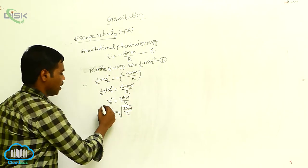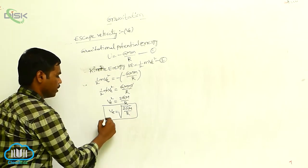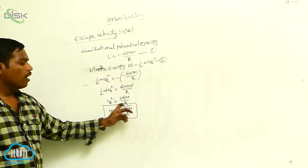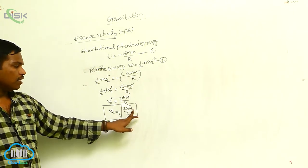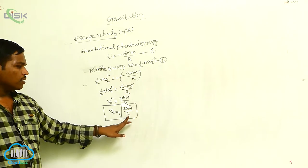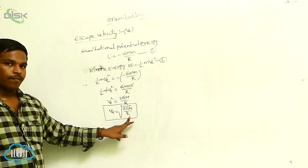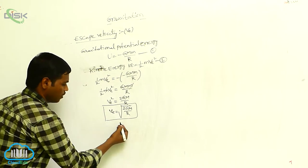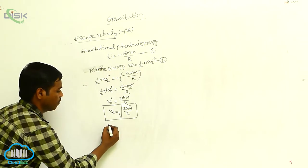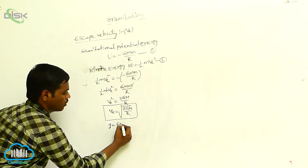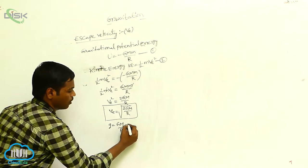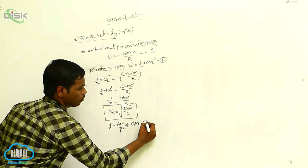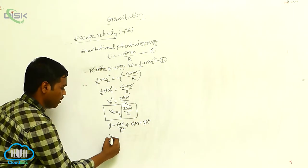This is the escape velocity of an object from the Earth. Here, capital M is the mass of the Earth and R is the radius of the Earth. This equation can be rewritten in terms of g, where g equals GM by R².